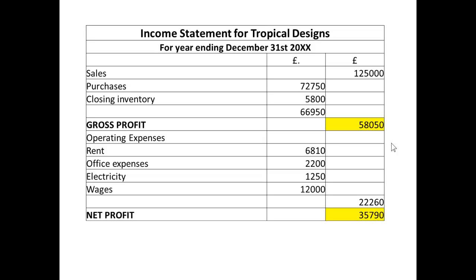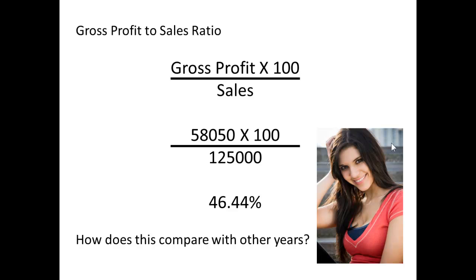So we'll take the income statement for Tropical Designs, and we can see that the gross profit for this particular year is £58,050, and the sales are £125,000. So the gross profit to sales ratio becomes £58,050 multiplied by 100 divided by £125,000, which comes to 46.44%.